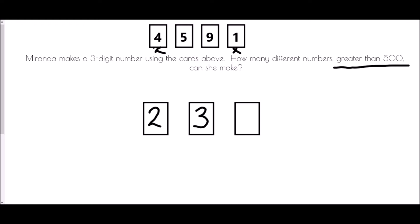And now, because we have used two digits in order to create the first two parts of our number, we only have two digits left from our cards. And so the last section, we also have two options. So a quick multiplication. Two times three times two equals twelve. Miranda could make twelve numbers which were greater than five hundred.